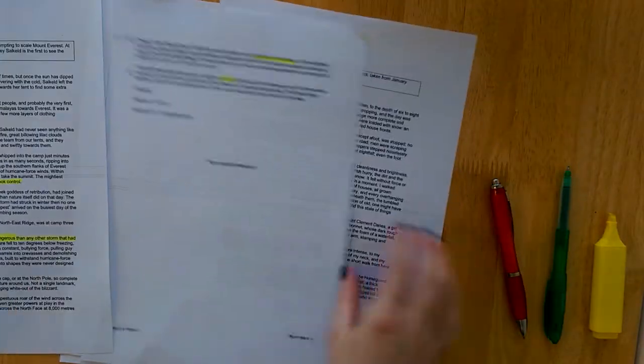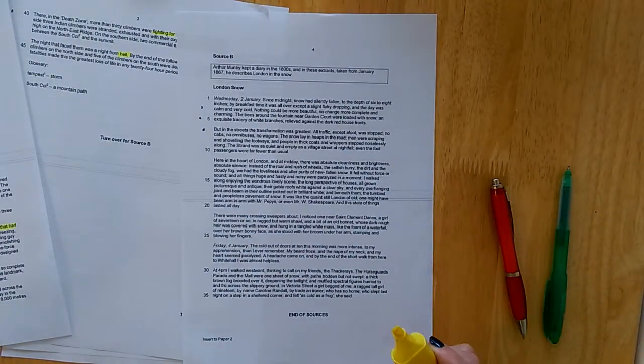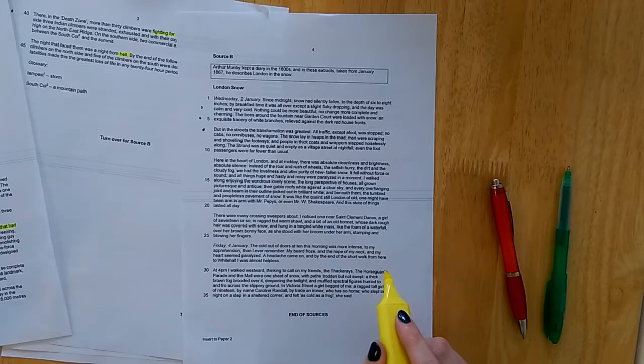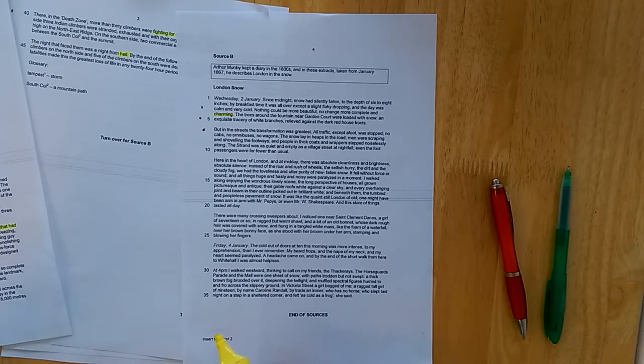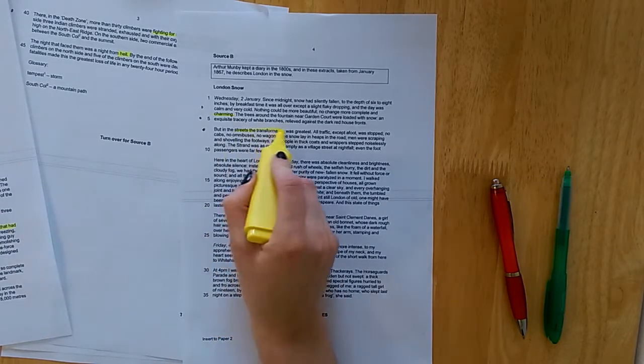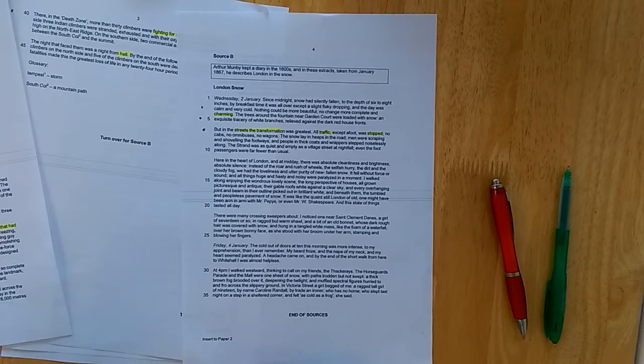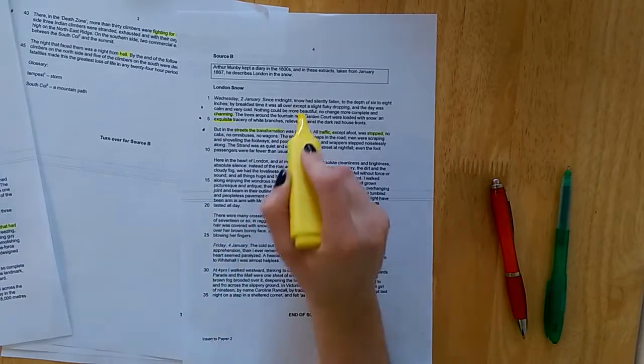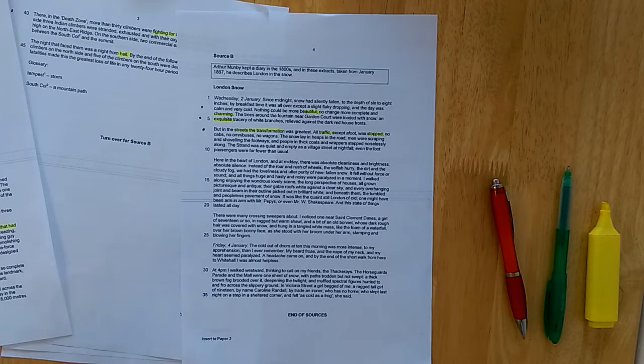Whereas source B is very different. Source B describes London in the 1800s in the snow. It's much more calm. It's about how beautiful London was in the snow. It's described as charming. It's presented as a very peaceful scene when the streets were transformed and all the traffic, except people walking on foot, was stopped. The snow is described as exquisite and beautiful. The effect is a sense of awe and nostalgia. Very different to the sense of panic created in text A.